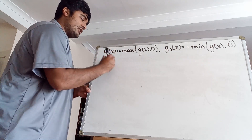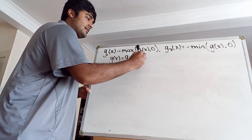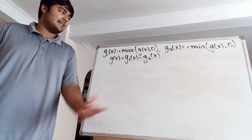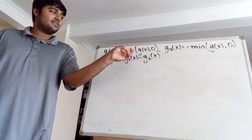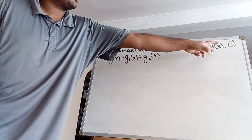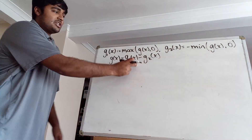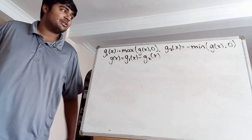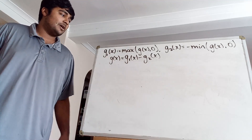We can check that g(x) is just equal to g1(x) minus g2(x), by splitting into cases. If g(x) is positive, g1 gives g(x) and g2 gives 0, so we get g(x) minus 0. You can check for yourself that it also holds when g(x) is negative.